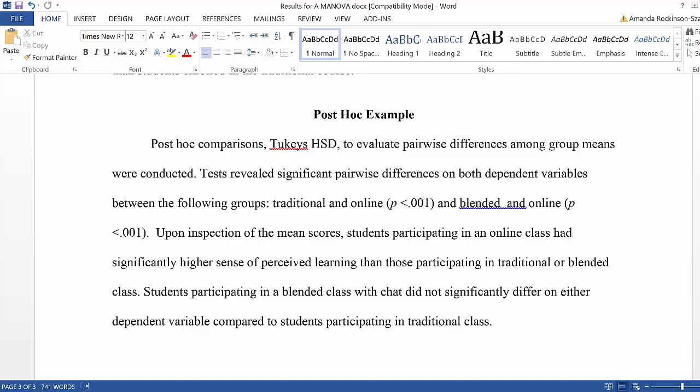That is, we need to determine where the differences between groups were. So for example, there could be a difference between the traditional and online group, but not the blended group. So we need to talk about where those differences are.